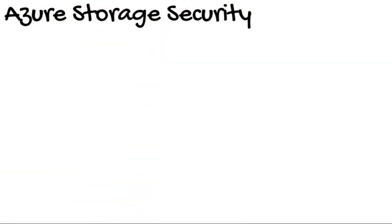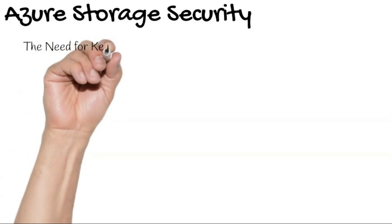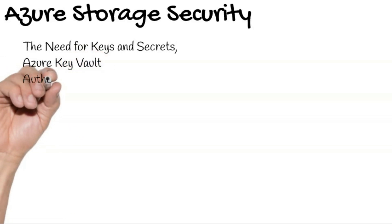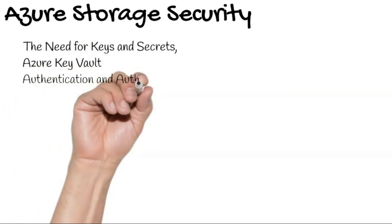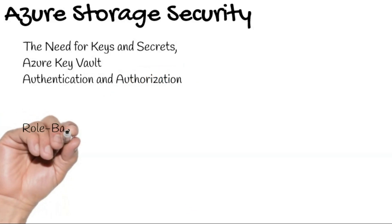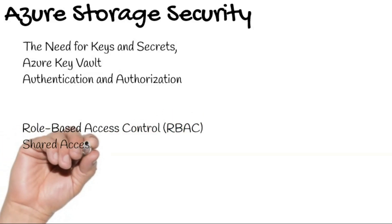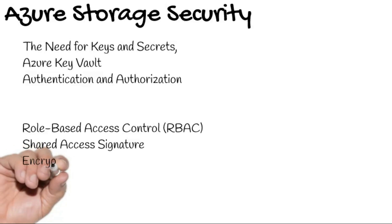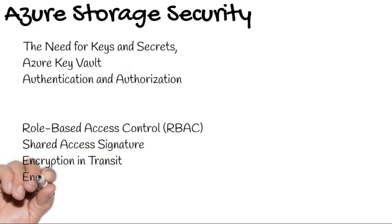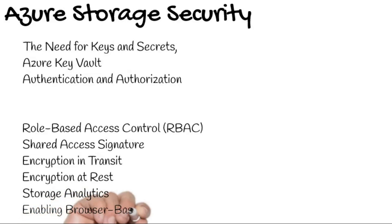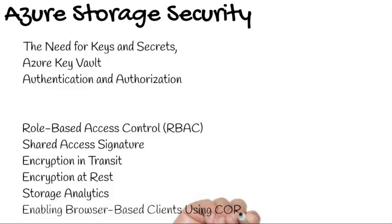In this video, we will cover a few of the terms such as the need for keys and secrets, Azure Key Vault, and authentication and authorization. In the subsequent video, we will cover role-based access control (RBAC), shared access signature, encryption in transit, encryption at rest, storage analytics, and enabling browser-based clients using CORS.